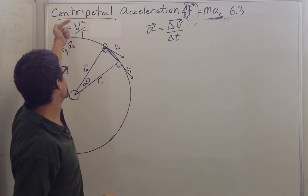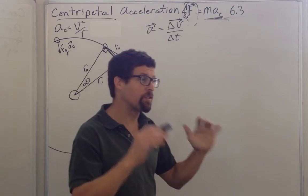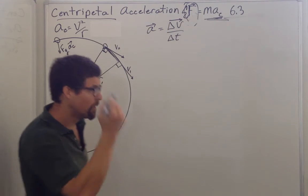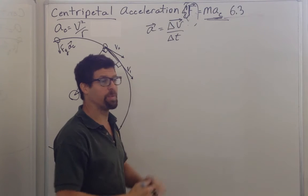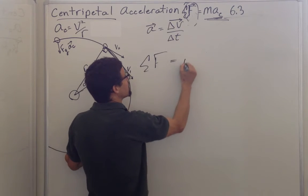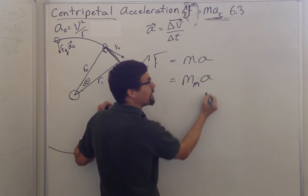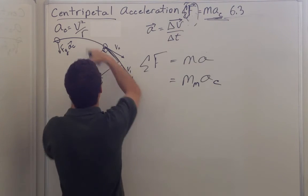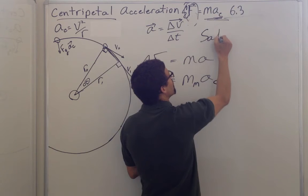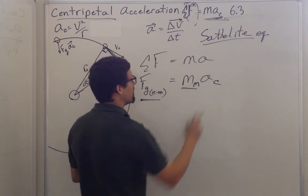So centripetal acceleration is v²/r. When you see uniform circular motion, the object undergoes centripetal acceleration. You don't know the force — there's no centripetal force — but you know there must be one. For the moon, the vector sum of the forces equals mass times acceleration: the mass of the moon times its centripetal acceleration. The only force is gravity between earth and moon. This is the satellite equation: gravity provides the centripetal acceleration.